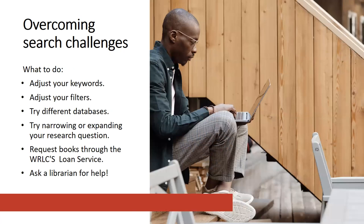So what are some things you can do to overcome research challenges? Number one: you can adjust your keywords — that might mean trying some of the different keywords you've brainstormed, or coming up with new ones. If you have too many results, adding more keywords can help narrow your search. Or if you don't have enough useful results, try fewer keywords. Something else you can do is adjust your filters — the filters on the left side of your screen in many databases really help make your search more specific. If you have too many results, you can add more filters to narrow down your results to something more manageable.